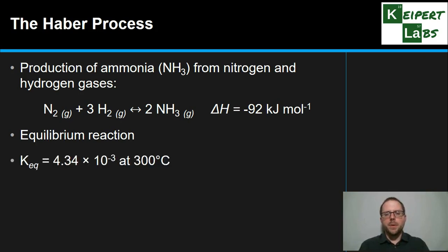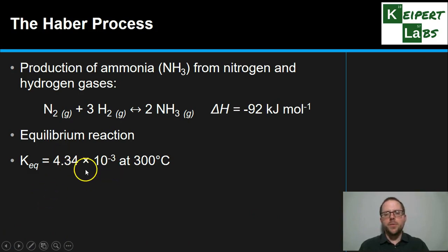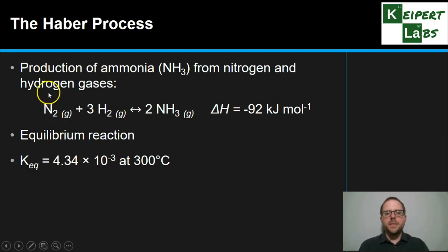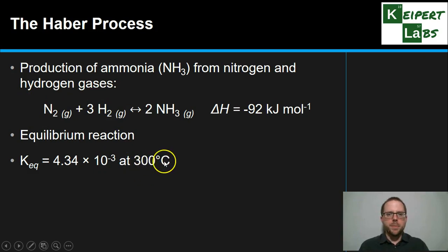We'll discuss that a bit further, a bit later on. For this equilibrium process at 300 degrees Celsius, you can see its Keq value is 4.34 times 10 to the minus 3. So the equilibrium still lies significantly to the left-hand side, even at an elevated temperature such as this.